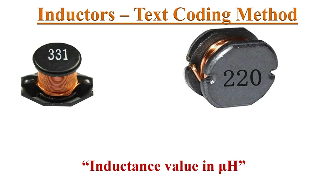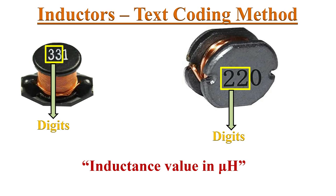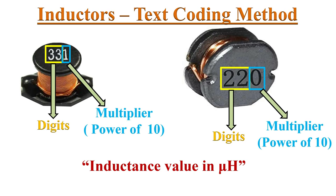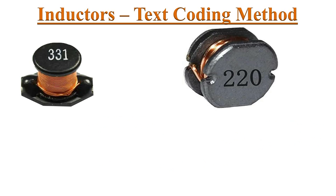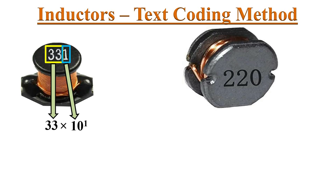A three-digit code consists of two value digits and a multiplier that is a power of 10, much like a resistor's color code. Here 331 indicates 33 multiplied by 10 to the power of 1, which equals 330 micro-Henrys of inductance.